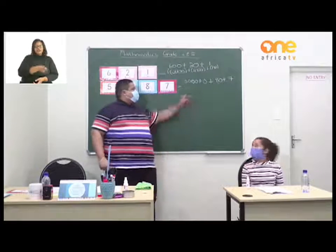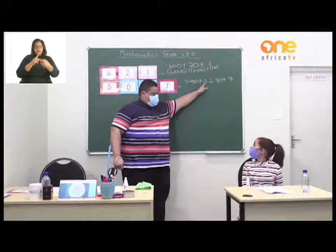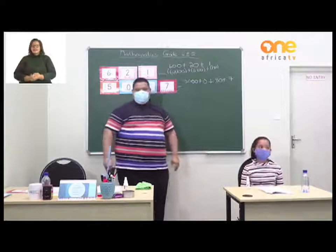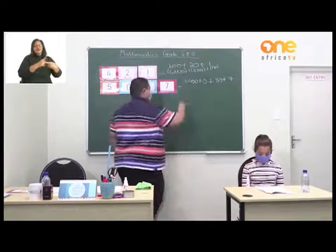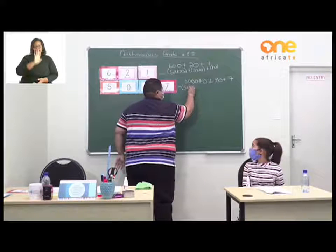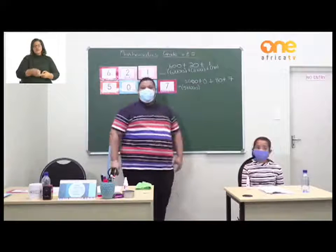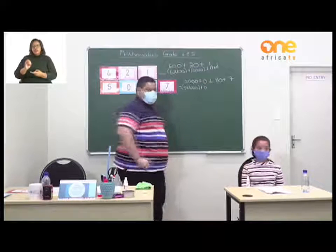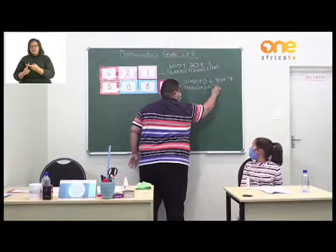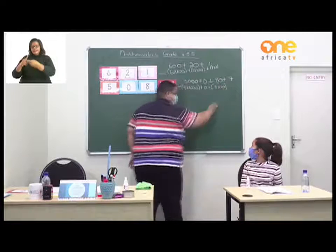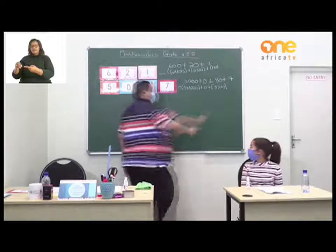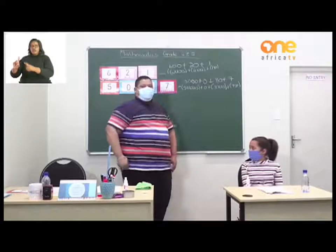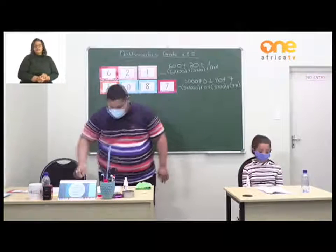The value of the 7 is 7 because it's in the units place. So 5,087 is written as 5,000 plus 0 (to show no hundreds) plus 80 plus 7. Using multiplication: 5 times 1,000 equals 5,000, plus zero hundreds, plus 8 times 10 equals 80, plus 7 times 1 equals 7.